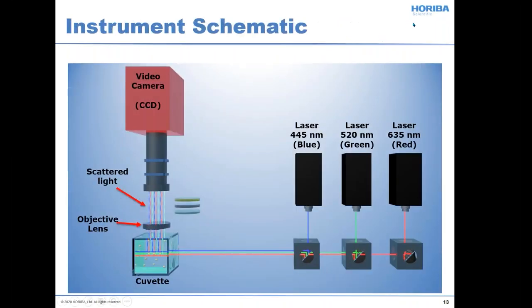Here's an instrument schematic for a multi-laser system. You have three lasers — red, green, and blue — whose beams are combined and hit the sample. You have a camera at a right angle looking at the scattering from each of the particles in there. A little bit later on, I will get into why we use three lasers.